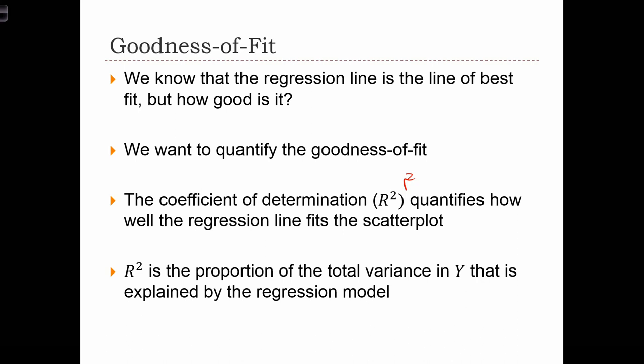So I want you to think back to when we learned about ANOVA. And with ANOVA, we were partitioning the variance, the total sum of squares, into between sum of squares and within group sum of squares. And we came up with an F statistic for ANOVA based on a partitioning of variance.